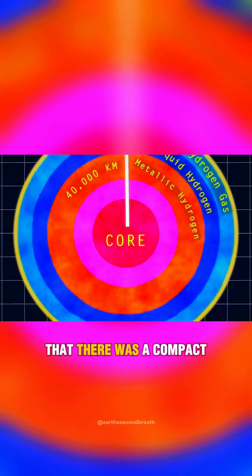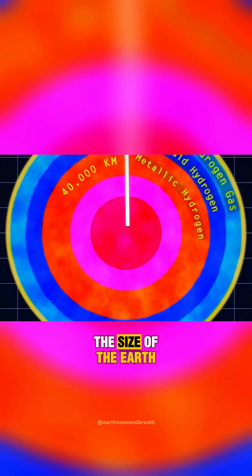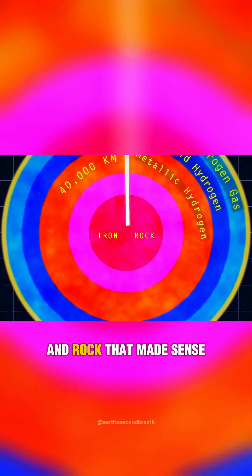We previously believed that there was a compact, dense object in the middle of Jupiter about the size of the Earth, and made up mostly of iron and rock. That made sense,